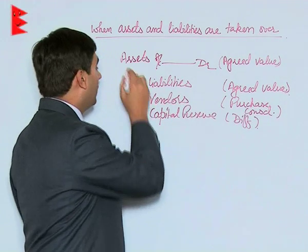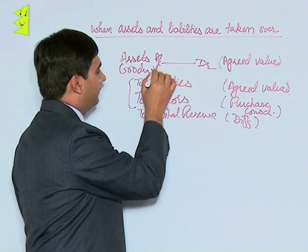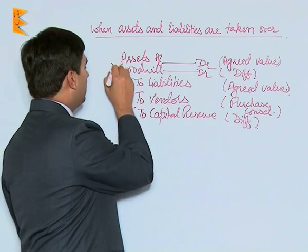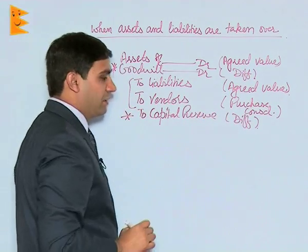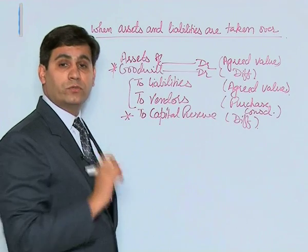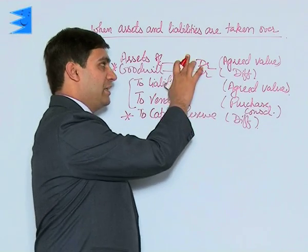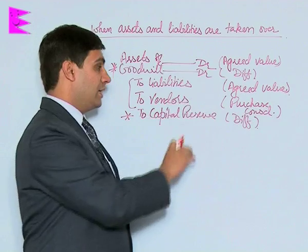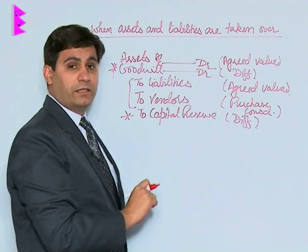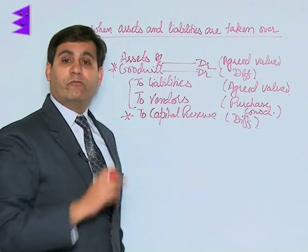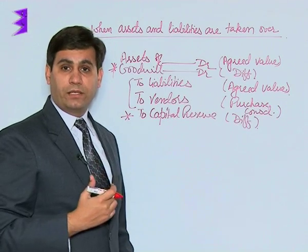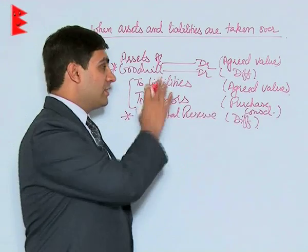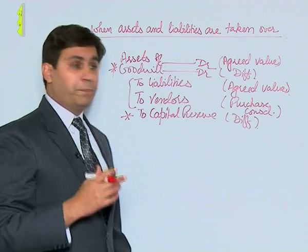It is also quite possible that the liability side or credit side is higher — then we will put in Goodwill on the debit side, again as the difference in value. Only one of these two will appear: if the debit side total is higher, we put in Capital Reserve and Goodwill will not appear; if the credit side total is higher, we put in Goodwill on the debit side with the differential value so as to balance the entry. Remember, only one of them — either Goodwill or Capital Reserve — will appear.